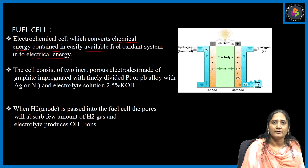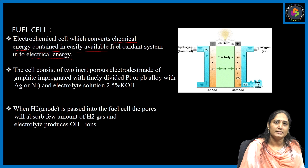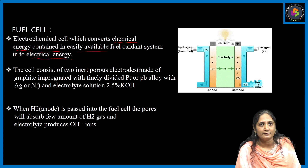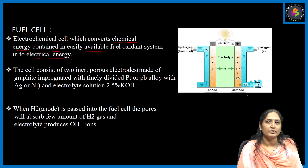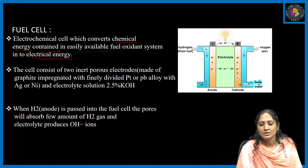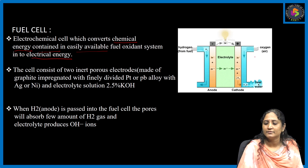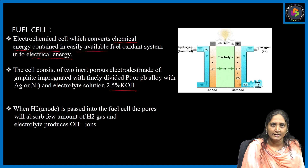These two electrodes are made up of graphite — one acts as anode and the second one acts as cathode. The graphite has a porous material. In one side we are passing H₂ gas and on the other side we are passing O₂ gas. Here, 25% KOH acts as the electrolyte.